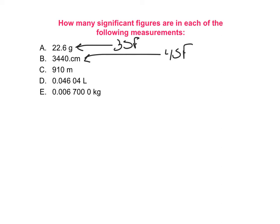For the next number, the zero is also to the right of some non-zero digits, but there's no decimal point, so that zero does not count this time. So it only has 2 significant figures.